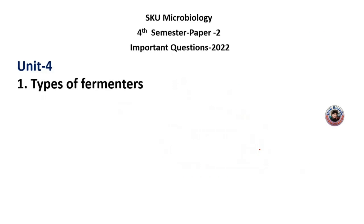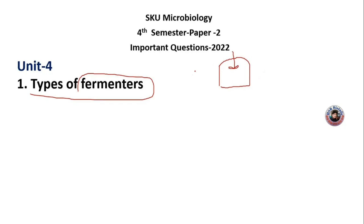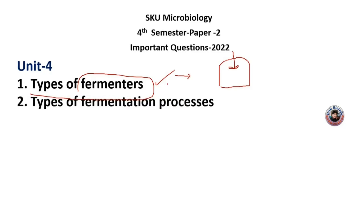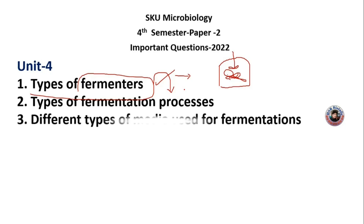Coming to unit 4, which is about fermentation. The first important question is the types of fermenters. We use different kinds of fermenters for different purposes. The second important question is the types of fermentation processes, including different types used in downstream production.